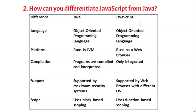2. Platform — Java runs in JVM; JavaScript runs on a web browser. 3. Compilation — Java programs are compiled and interpreted; JavaScript is only interpreted. 4. Support — Java is supported by maximum operating systems; JavaScript is supported by web browsers with different OS. 5. Scope — Java uses block-based scoping; JavaScript uses function-based scoping.